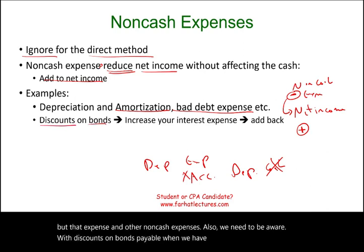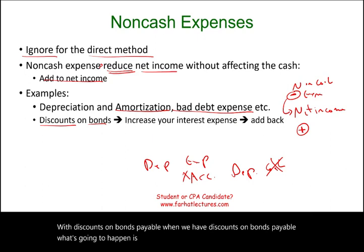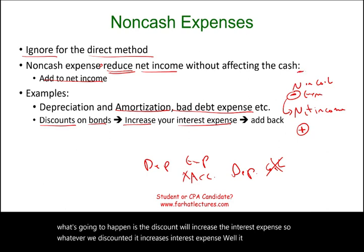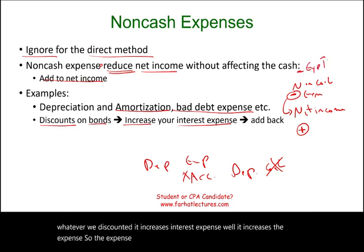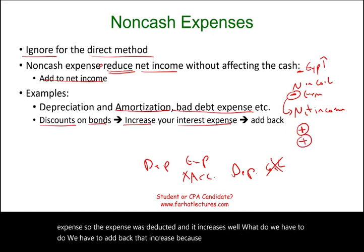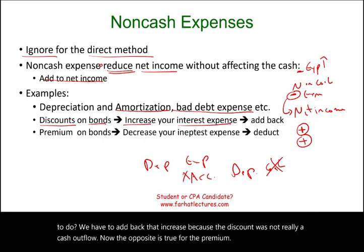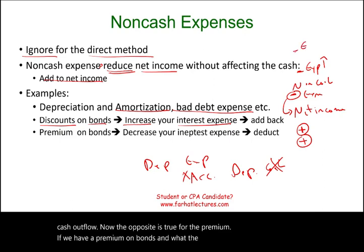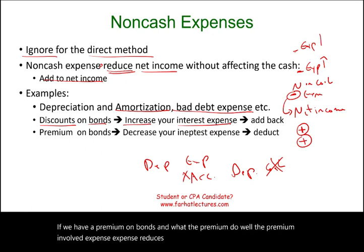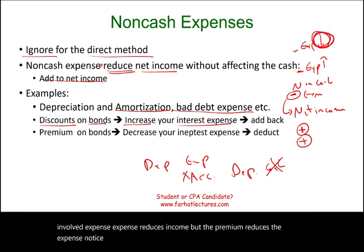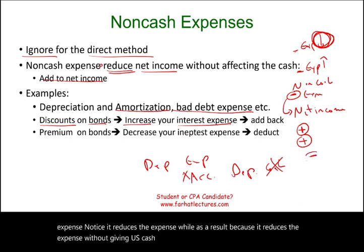The discount increases the interest expense, so the expense was deducted and it increases. We have to add back that increase because the discount was not really a cash outflow. The opposite is true for a premium on bonds — the premium reduces the interest expense. But because it reduces the expense without giving us cash, we need to deduct it as an adjustment. So it's the opposite of a discount — the expense went down, but we did not really save any cash.